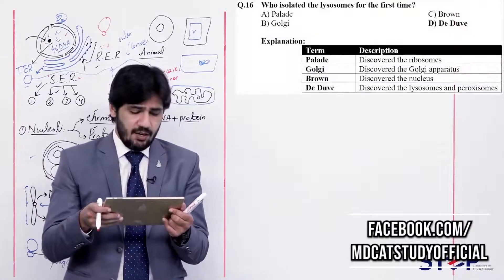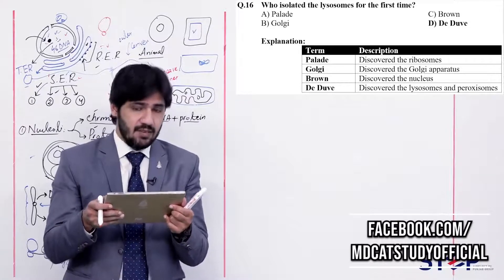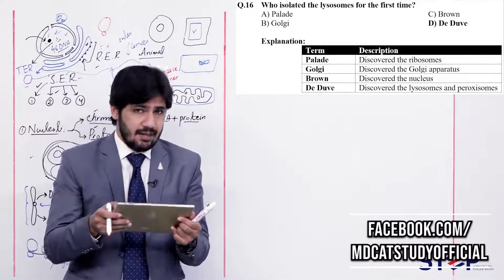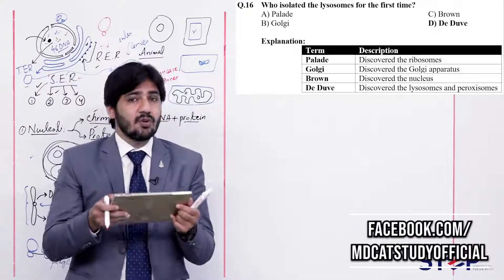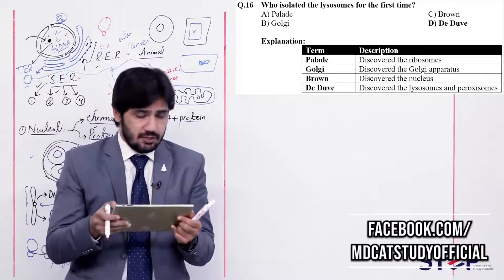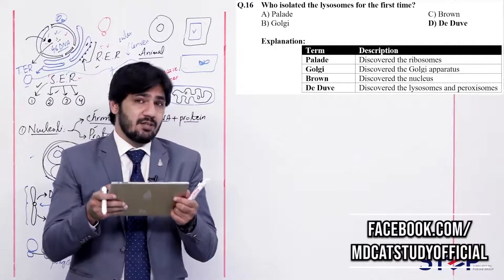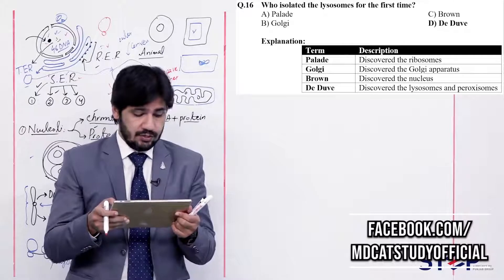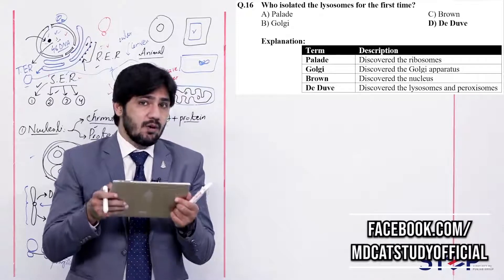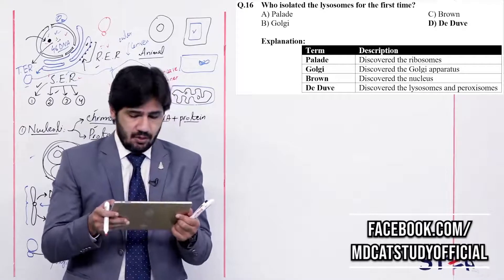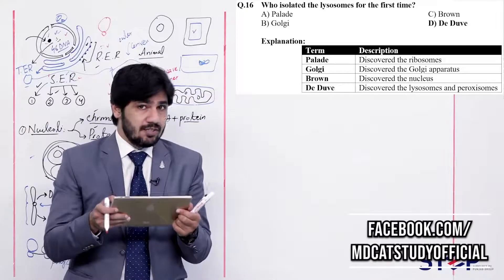Pallade discovered the ribosome. Camillo Golgi was the scientist who discovered the Golgi apparatus. Robert Brown discovered the nucleus for the first time. Question 17: Single sac with acid phosphatases and several other hydrolytic enzymes found in eukaryotic cells are called (alpha) autophagosomes, (beta) dictiosomes, (charlie) peroxisome, (delta) lysosome. Autophagosomes are the functional form of lysosomes, converted from the primary lysosome. Since delta mentions lysosome, the right option is delta — lysosome.